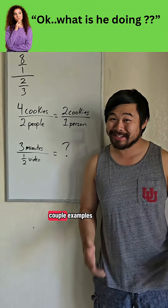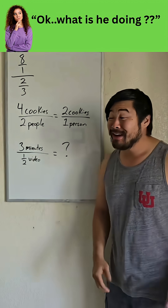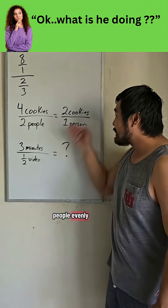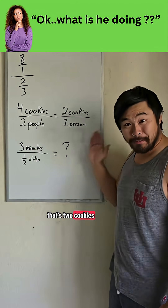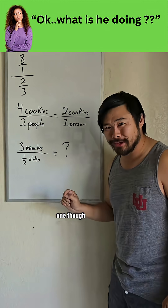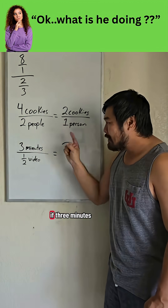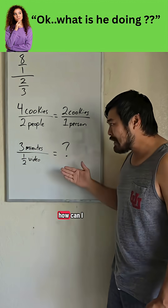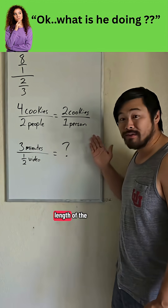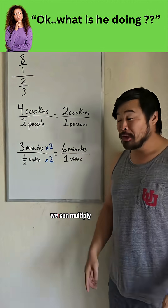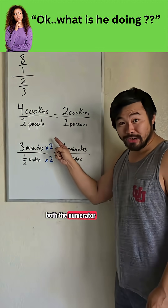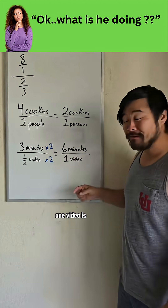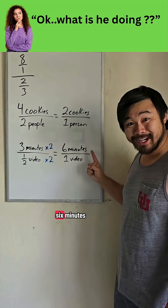Let's first take a look at a couple examples. If I have to share four cookies with two people evenly, that's two cookies per person. What about this one though? If three minutes is the length of half of the video, how can I figure out the length of the whole video? We can multiply both the numerator and the denominator by two to see that the length of one video is six minutes.